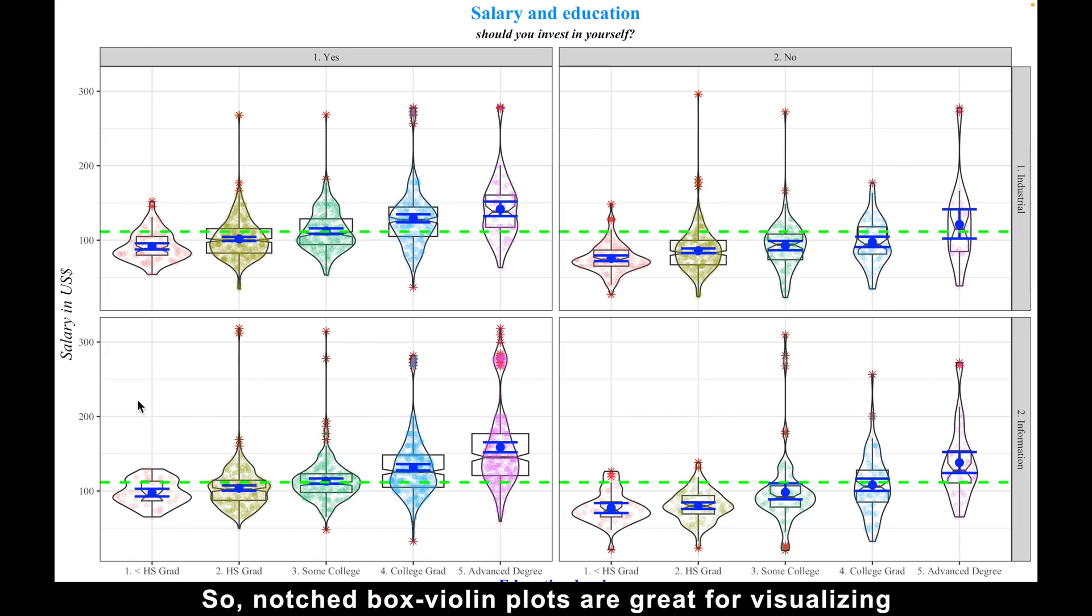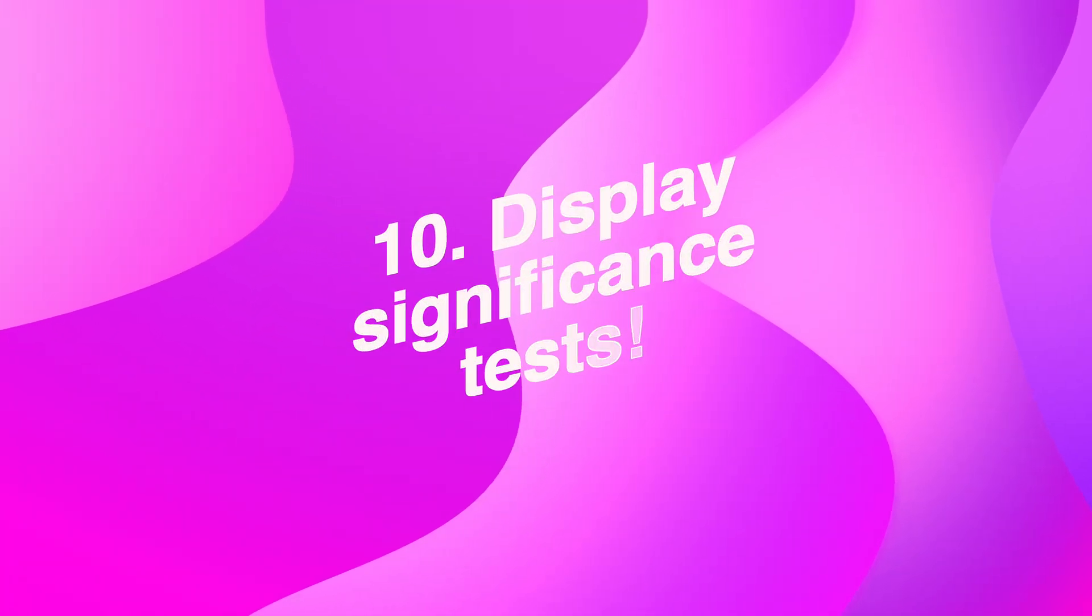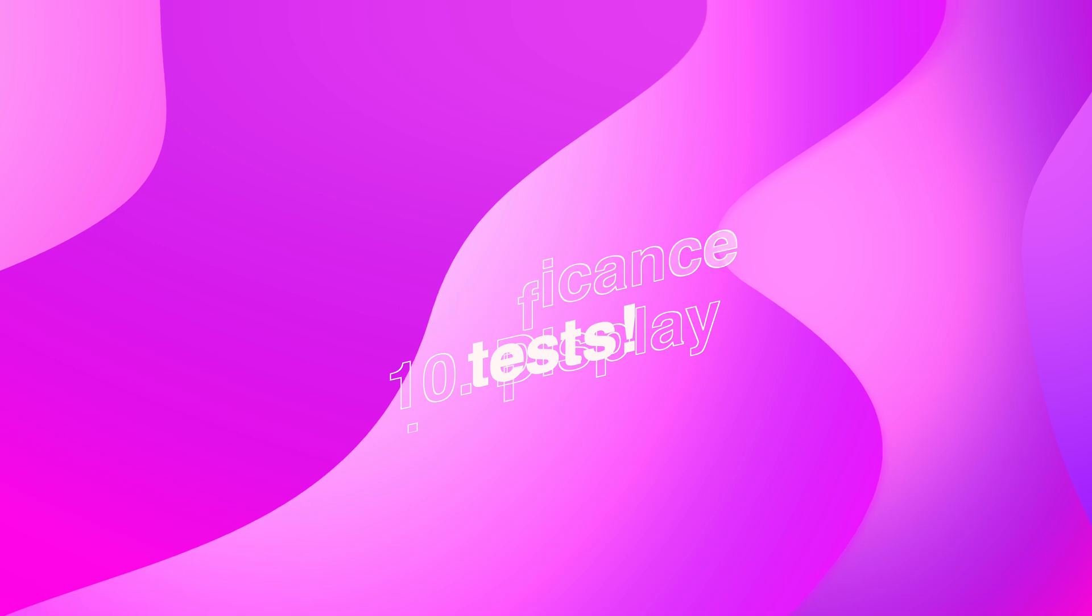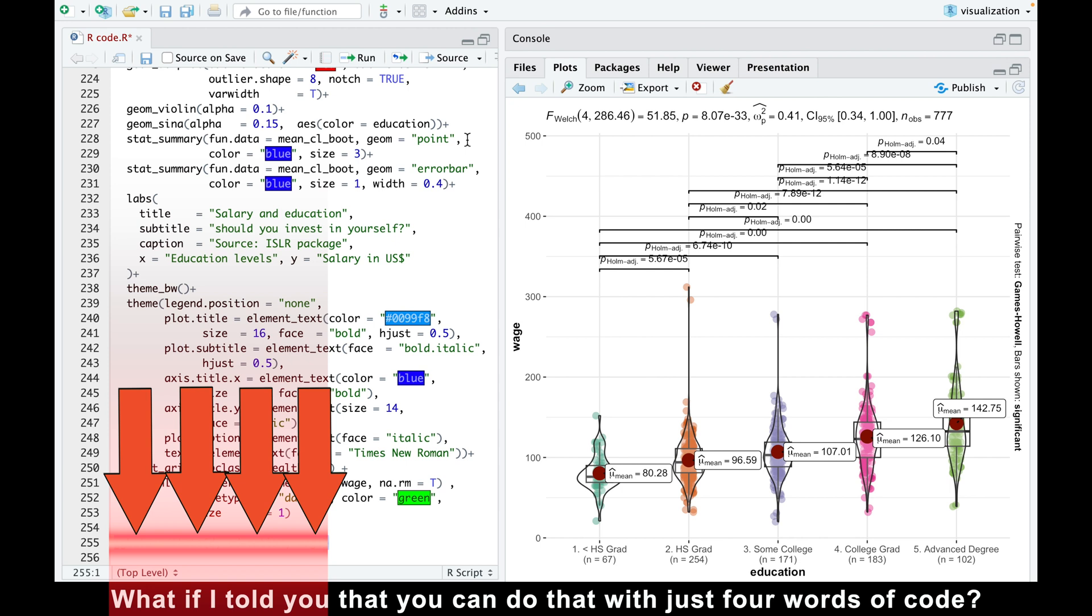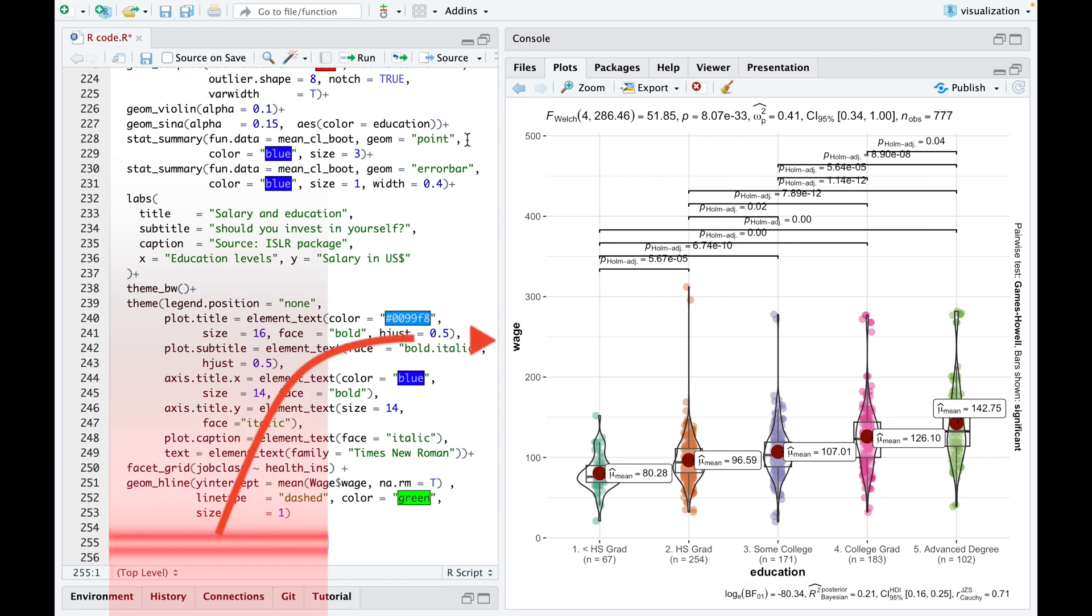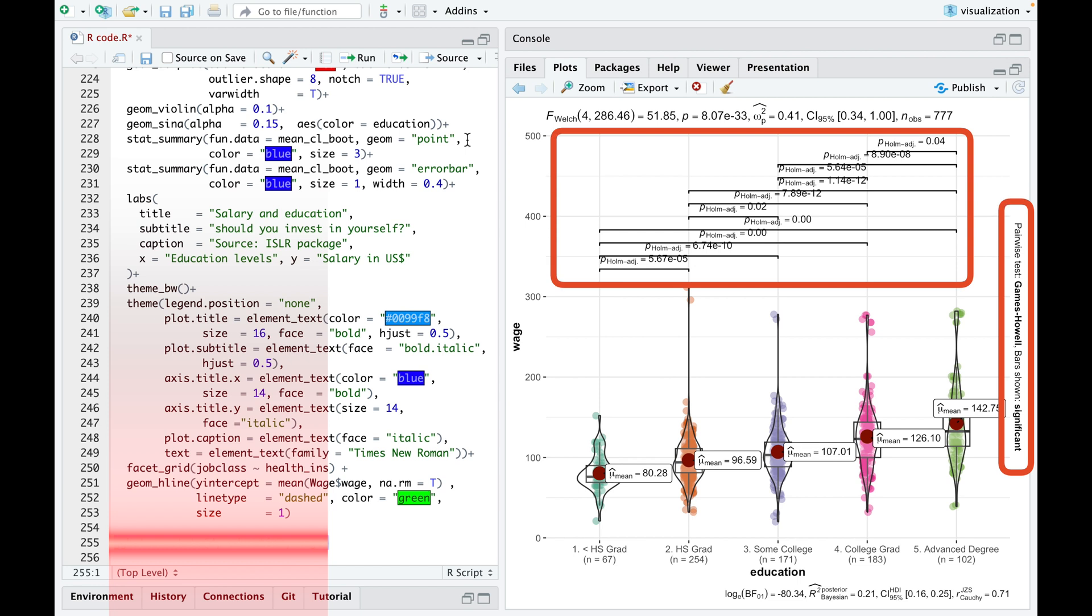So, notched box violin plots are great for visualizing and comparing the distribution of different groups. But how can we test whether the differences are statistically significant? What if I told you that you can do that with just four words of code? Yes, you heard me right. With only four words, you can perform both Bayesian and frequentist ANOVAs on your data and even show pairwise post-hoc tests on the same plot. And if you want to learn how to do that and how to interpret every number on this plot, check out my video on ANOVA. I'll see you next time.